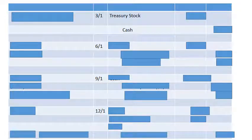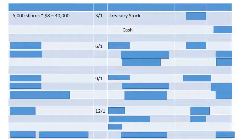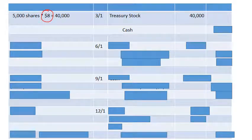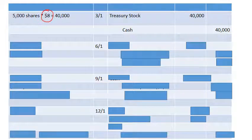On March 1st, they purchased 5,000 shares of stock at $8 per share. Treasury stock is going to have a debit because it's a contra equity account, and cash goes down. This $8 per share is important because as the treasury stock gets sold, it always carries a value of $8 — like an inventory. So treasury stock is debited for $40,000, and $40,000 of cash is paid.